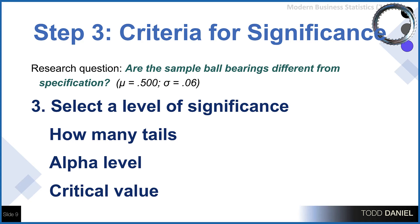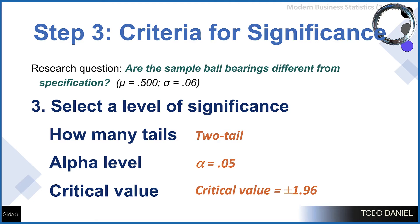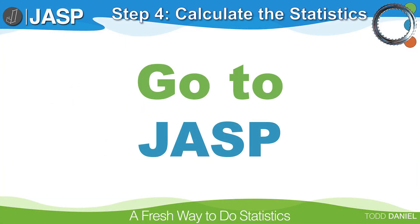That brings us to step three. Let's set our criteria for significance. We are using a two-tailed test with an alpha level of 0.05. Using a normal distribution, our critical value will be positive or negative 1.96. And now we are ready to calculate the statistics, and for that we will go to JASP.